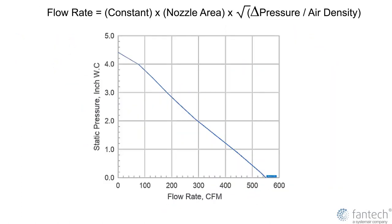Flow rate can be calculated from pressure drop across the nozzle wall, air density, and total cross-sectional area of all open nozzles.